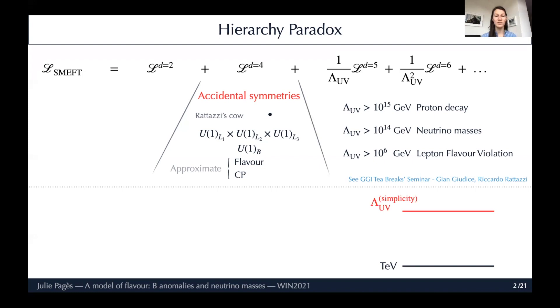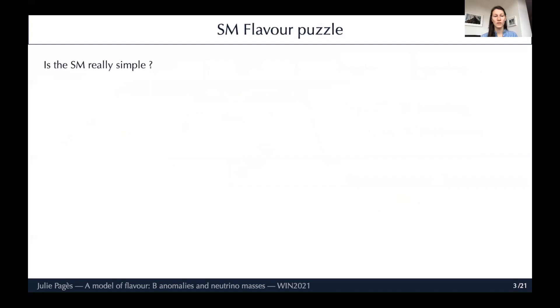That is the scale of new physics we expect from simplicity: 10^15 GeV for proton decay, 10^14 for neutrino masses, and at least from what we see 10^6 for lepton flavour violation. On the other side, the Higgs mass is quadratically sensitive to the scale of new physics, and a high scale would destabilize its mass. That's the big hierarchy problem. The scale for naturalness must therefore be as close as possible to the Higgs mass. This is the hierarchy paradox - it opposes naturalness and simplicity.